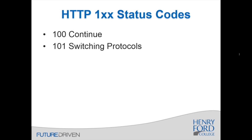The 100-level codes are pretty rarely used — I haven't really seen them in practice. For a 100 Continue message, you have to ask for a continue in your request; the server then checks the headers and tells the client to go ahead. The 101 is for switching protocols via the upgrade command, which will come into play more with WebSockets — an advanced protocol not covered in this class.